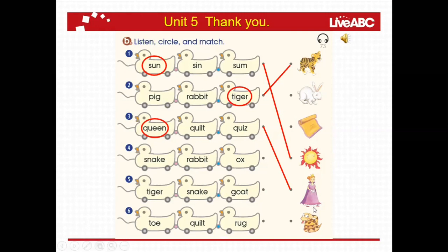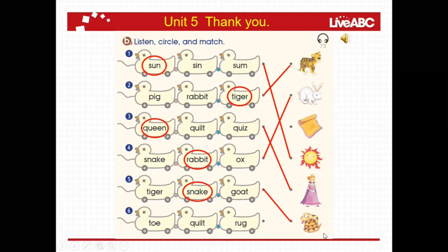Match. Una. Number four: rabbit. Rabbit. Circle the word. Rabbit. And match. Rabbit. What is the meaning of rabbit? Conejo. Conejo. Number five, listen: snake. Snake. Repeat: snake. Snake. What is the meaning of snake? Serpiente. Okay.